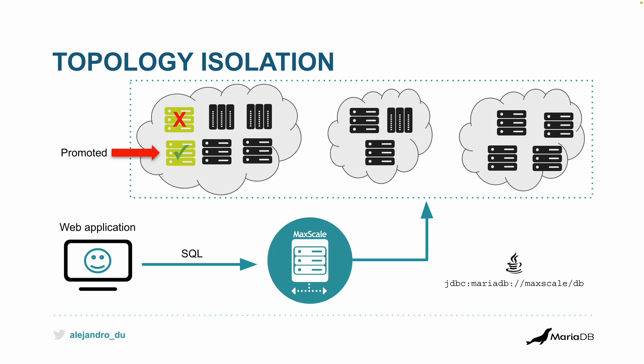The system is working as before, perhaps with reduced capacity. At some point that failing node is going to be back — recovered, restarted, or the cable plugged back in. MaxScale detects this automatically and configures the previously primary server as a new replica.